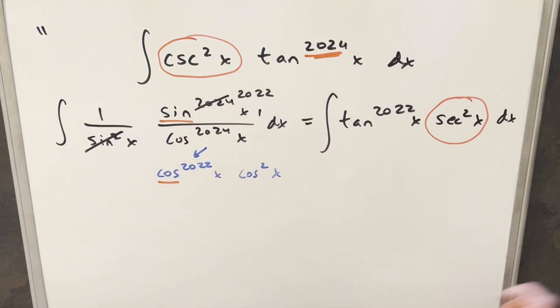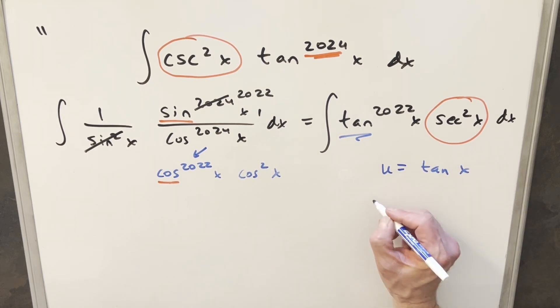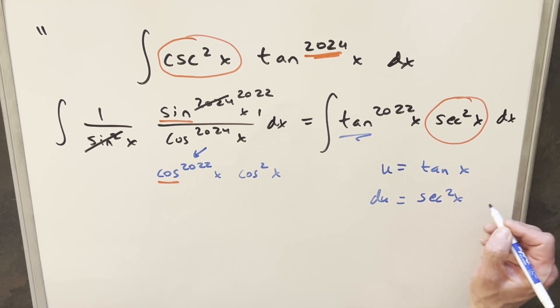So now we're set up for our u substitution we wanted to do in the first place. So we'll do a u sub, and my u sub will be for just tan x. So we'll do that over here. We'll take a derivative. du is going to be this thing, secant squared x dx.